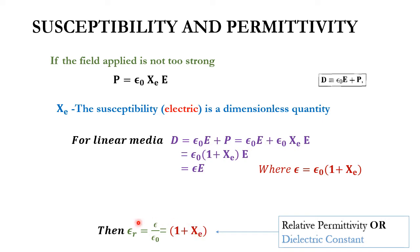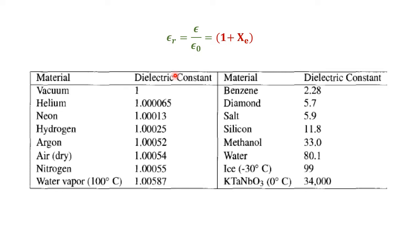So εᵣ = 1 + χₑ, connecting susceptibility χₑ to relative permittivity εᵣ. This εᵣ is called the relative permittivity or dielectric constant of the medium. Therefore the susceptibility χₑ = εᵣ − 1, that is the relative dielectric constant minus 1.